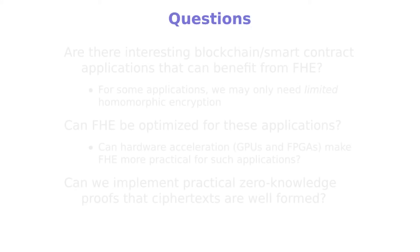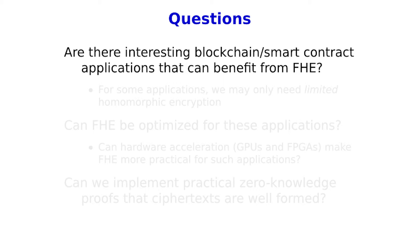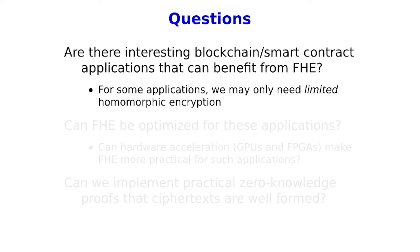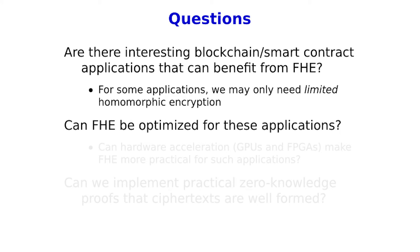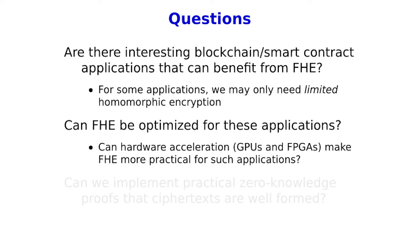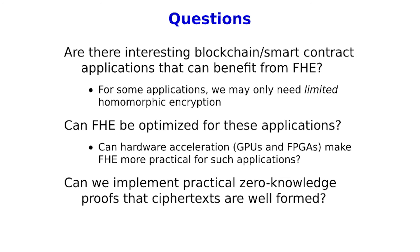Some questions worth thinking about: Are there any interesting blockchain smart contract applications that could benefit from fully homomorphic encryption? Some schemes already do limited additive homomorphic encryption, but can you benefit from the full power of FHE? Since I've told you how slow it is, can FHE be optimized for these applications? Can you do something interesting with just a handful of multiplies and additions? And can you speed things up using hardware accelerators like GPUs and FPGAs? That's actually what we're working on nowadays.